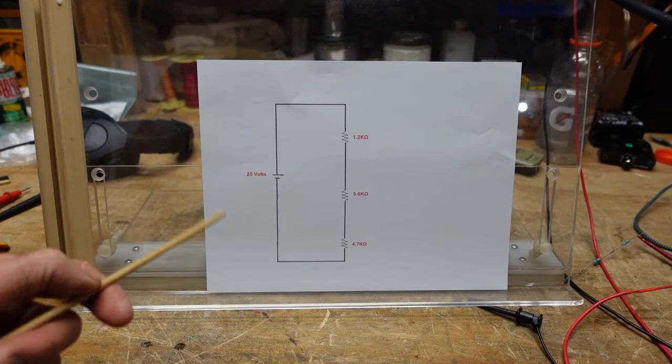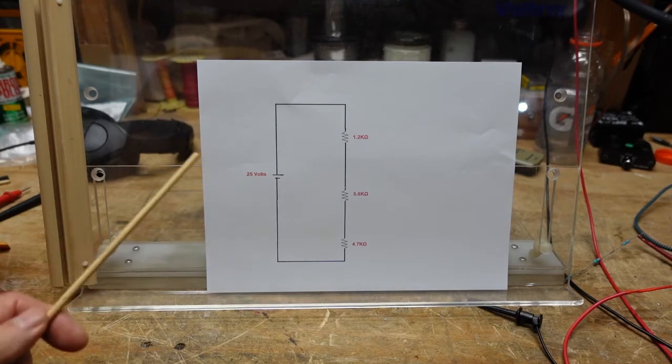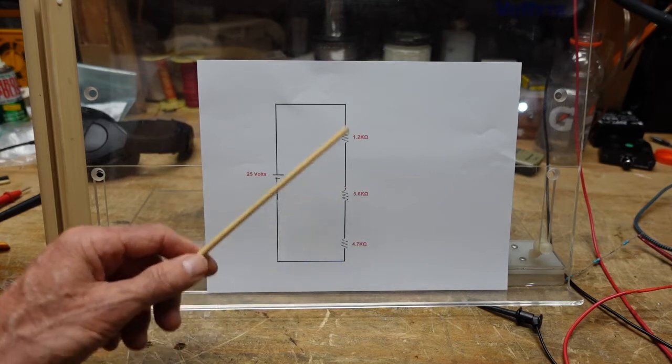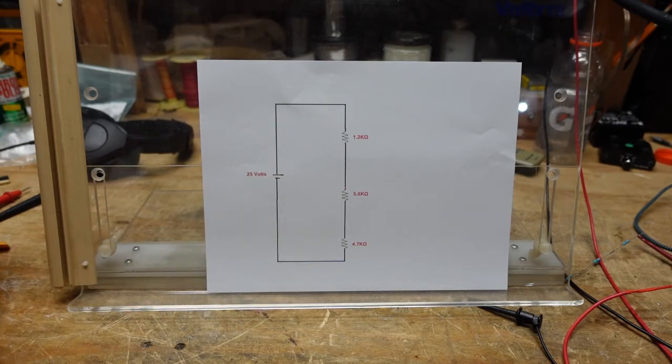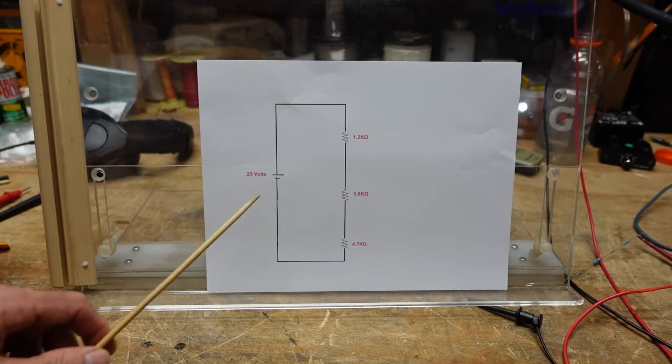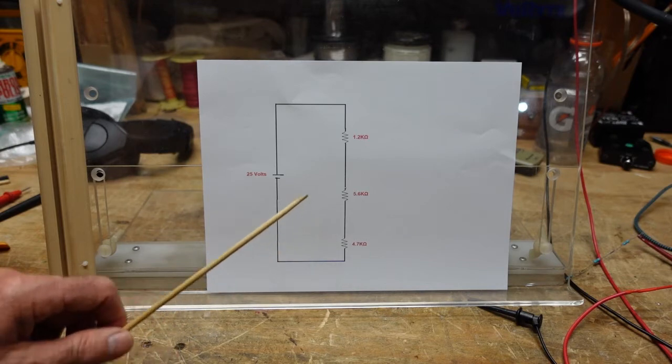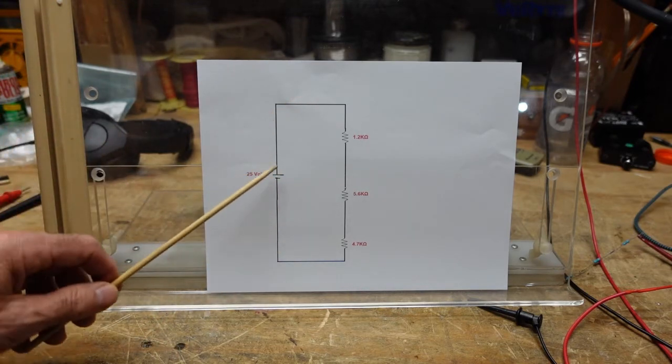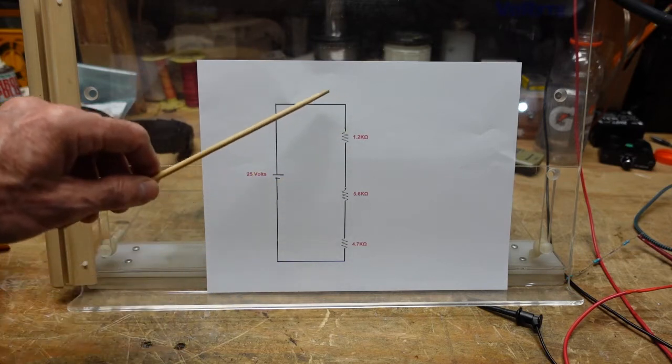Okay, so here we have a schematic representation of a simple series circuit consisting of a power source and three resistors. Now there's an axiom I was taught when we were in tech school and it was this: current's the same in a series circuit. What does that mean? Well it means that anywhere we were to break this circuit and insert an ammeter we would measure the same current because there is only one path for current to flow through.